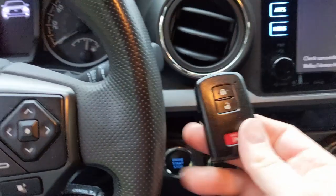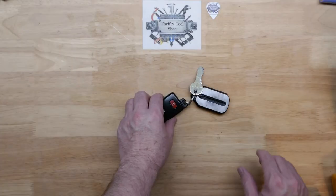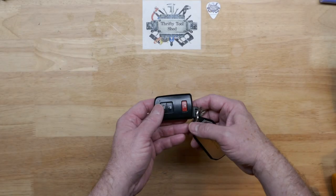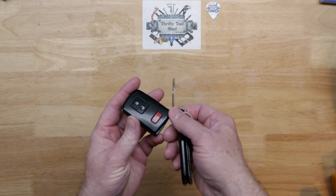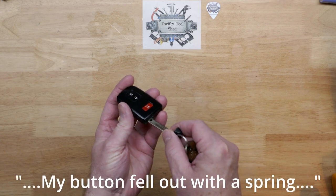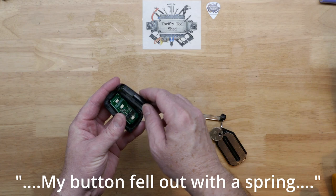But recently, a viewer named Ryan asked a question about the spring on the side of the key fob. So let's take a look at this today. I've never had an issue with mine, but I believe he said his spring fell out when he was taking his apart and didn't know how it went back together.